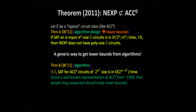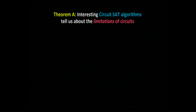Theorem B was that for this weird annoying ACC circuit class, there actually was a SAT algorithm that worked very well — an algorithmic way of exploiting a representation that everyone suspected should imply lower bounds but no one could figure out how. These are the two components of the proof, and Theorem A is really where the algorithmic argument idea comes in.